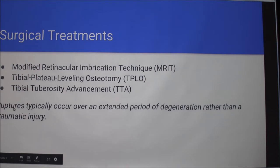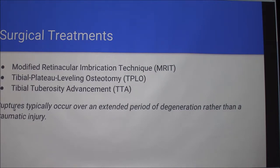The surgical treatments are the MRIT, the TPLO, and the TTA — they all have longer names but that's usually what people call them. The ruptures in dogs usually happen over an extended period of time, rather than in humans where an ACL tear usually happens during sports or something. So the treatments are going to be slightly different because it's more degenerative.